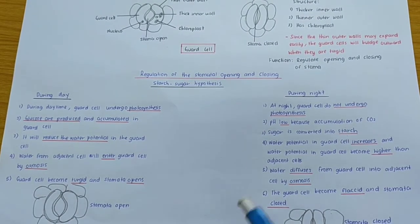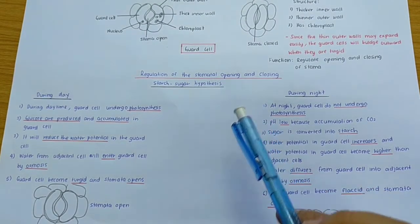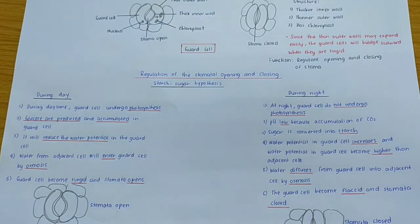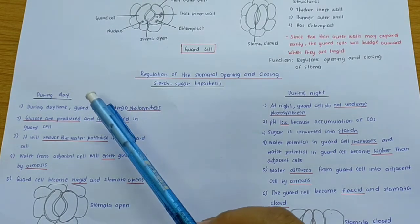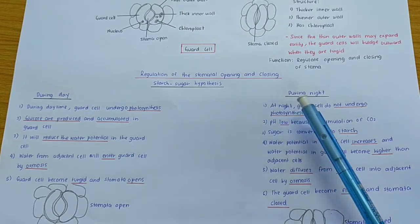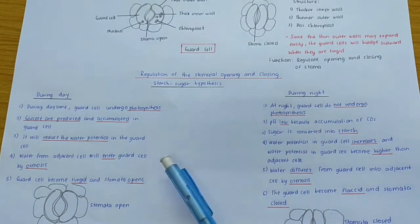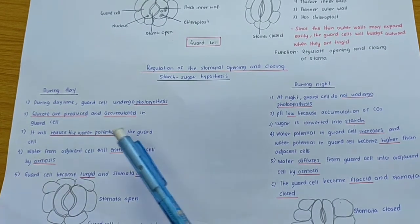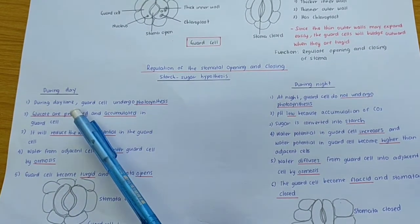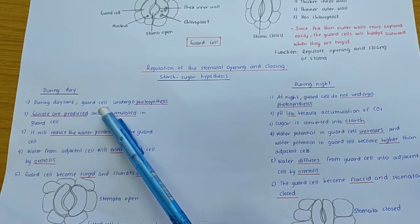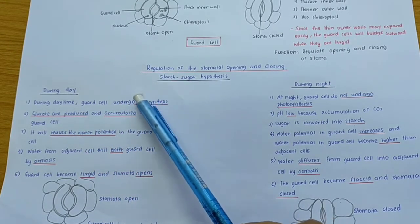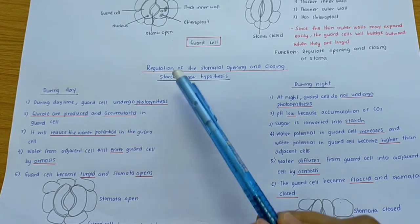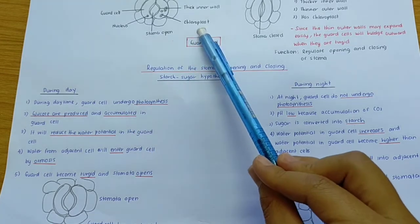Now we look at the regulation of stomata opening and closing based on the starch-sugar hypothesis. To explain the starch-sugar hypothesis, you have to differentiate what happens to the guard cell during the day and during the night. Let's look at the daytime first.